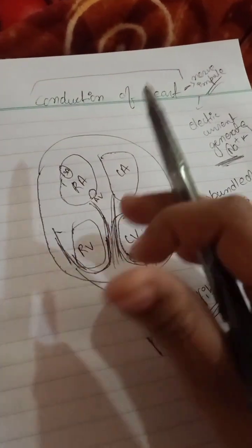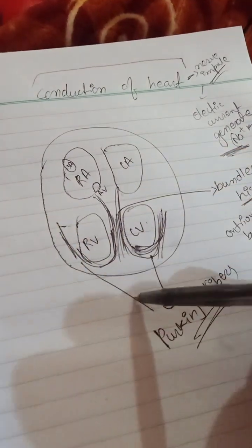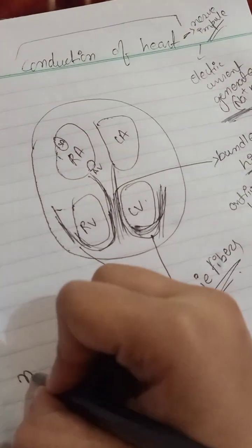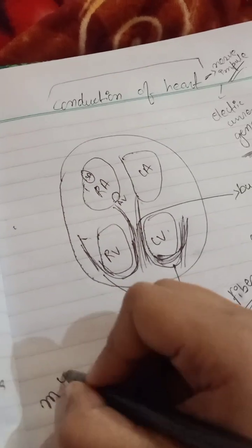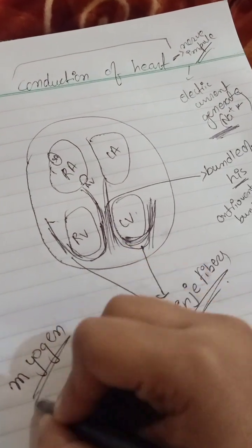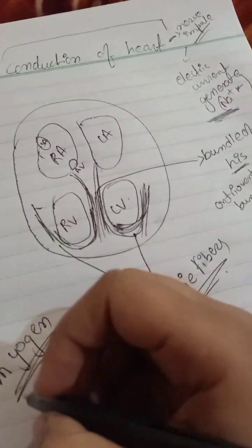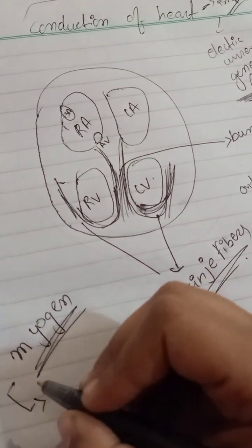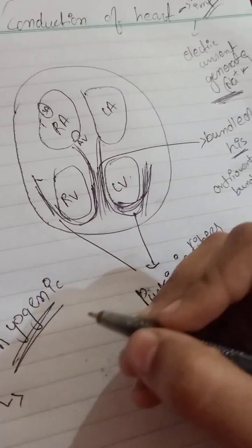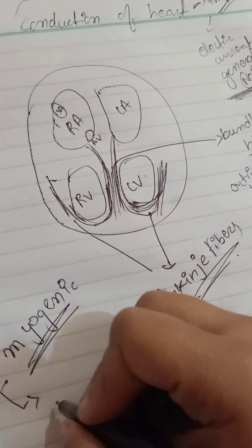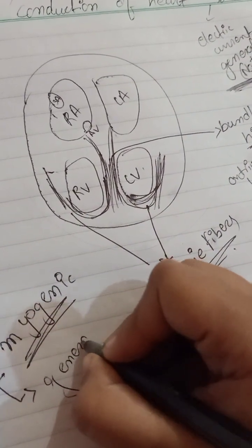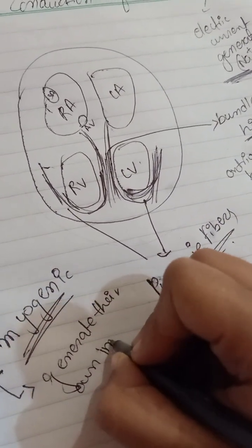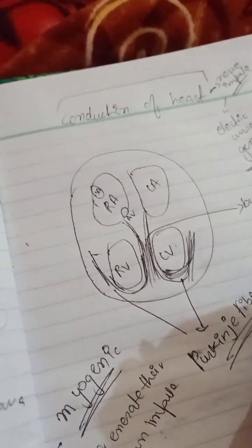The signal spreads through the cardiac muscles of the heart. The cardiac muscles are also called myogenic, which means the heart is a myogenic type of muscle - it can generate its own impulse.